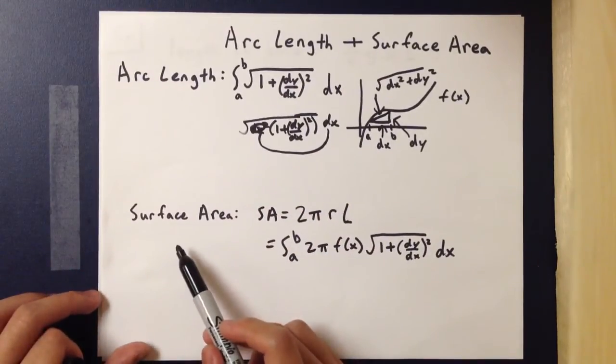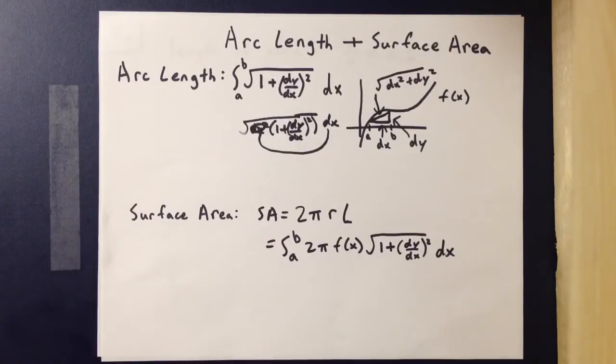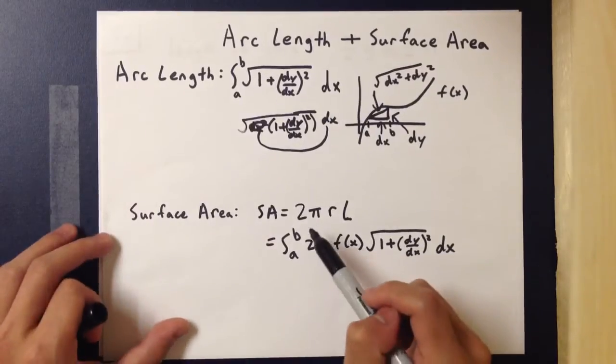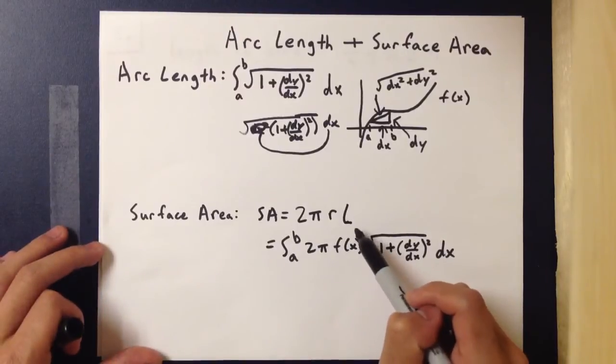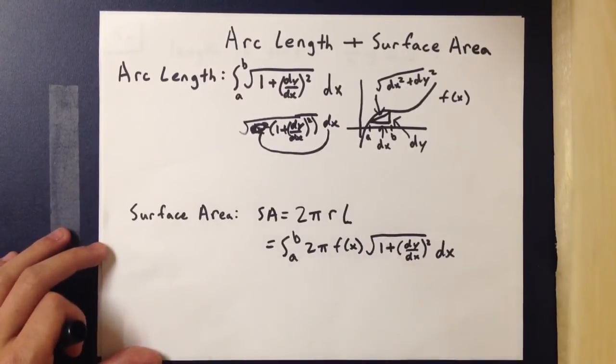Going off of that, surface area uses a very similar concept. You take 2πr, which is circumference, multiplied by the length, and that gives you the surface area.